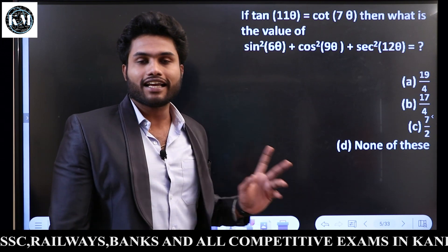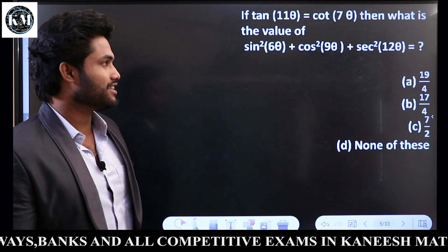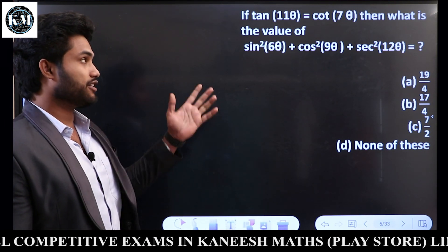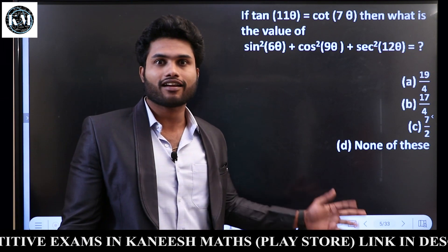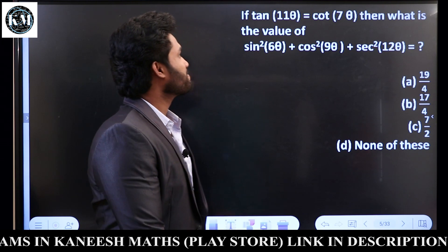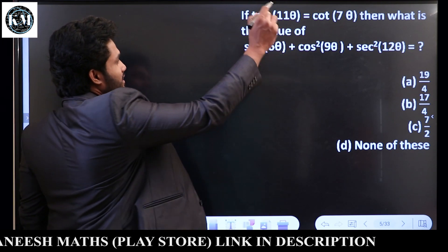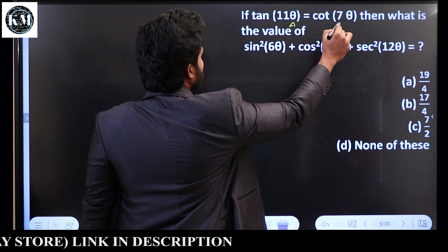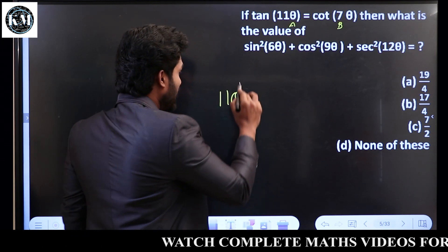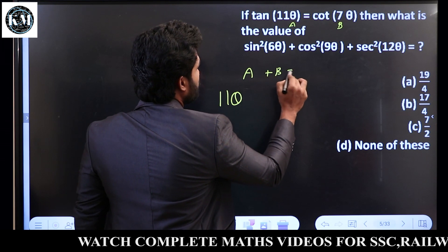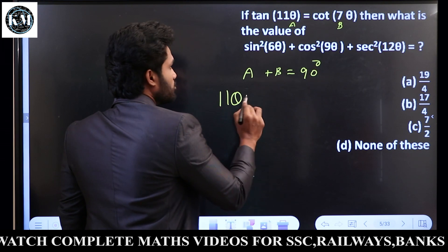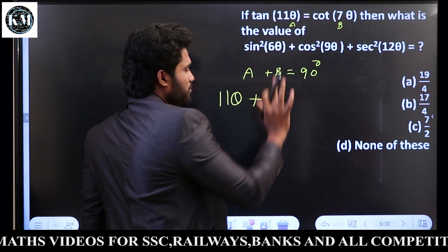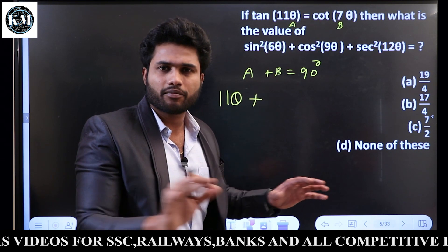Tan 11θ equals Cot 7θ. Now if you are given this, what is the value of Sin² 6θ plus Cos² 9θ plus Sec² 12θ? What do you do? Tan 11θ — so A equals 11θ, B equals 7θ. So A plus B equals 90 degrees. Clear guys?